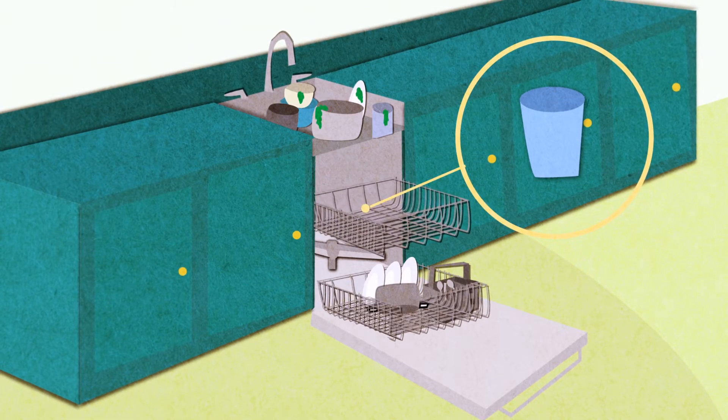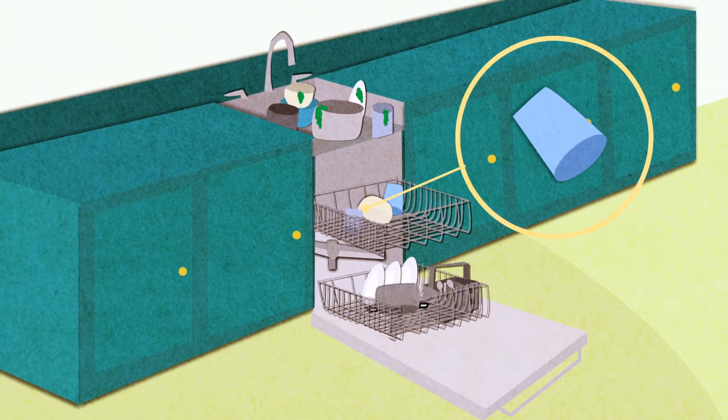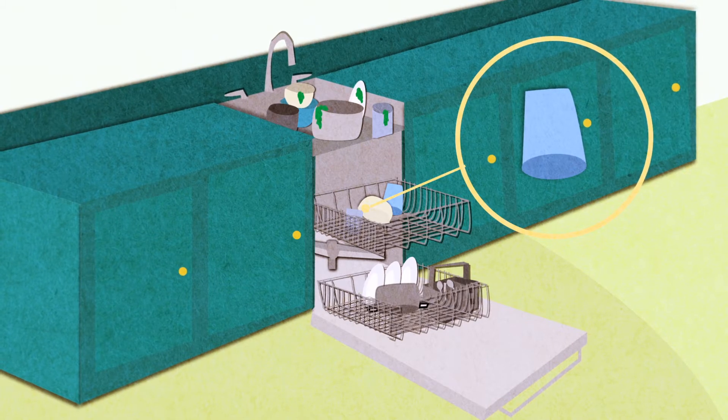Top rack is for glasses, mugs, bowls and plastics. Putting glasses, bowls and mugs at angles also helps water from pooling on the bottoms.